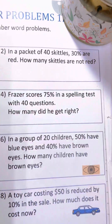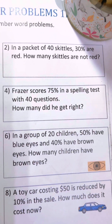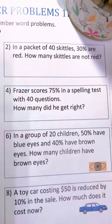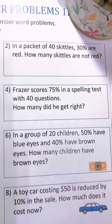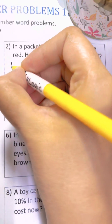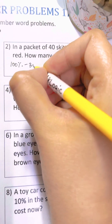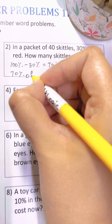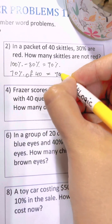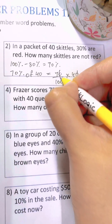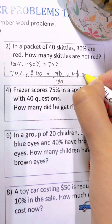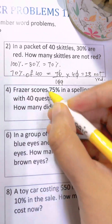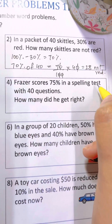Question number two: in a packet of 40 skittles, 30% are red — how many skittles are not red? Since 30% are red, subtract from 100: 100% minus 30% = 70% are not red. So 70% of 40: 70 over 100 times 40, cancel out the two zeros, 7 times 4 is 28. So 28 skittles are not red.